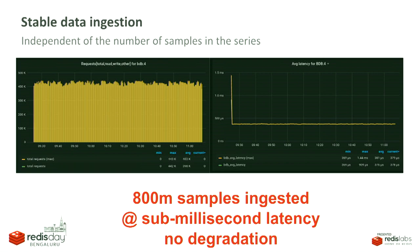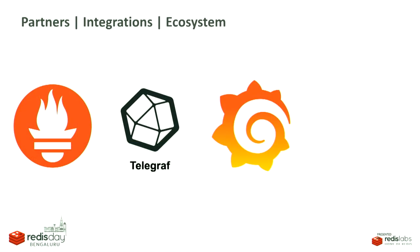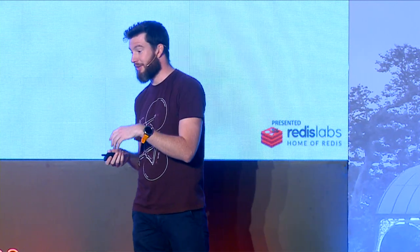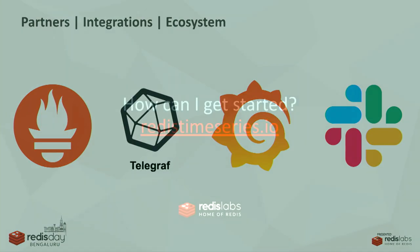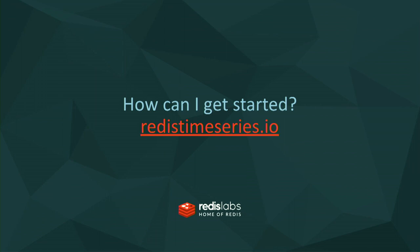Redis Time Series integrates with Prometheus, has support for Telegraf (the Influx solution), and Grafana — which runs on top of Prometheus but also has a direct connection to Redis Time Series. And a small cliffhanger: come to the hackathon this evening, there might be something with Slack. Get started at redistimeseries.io.